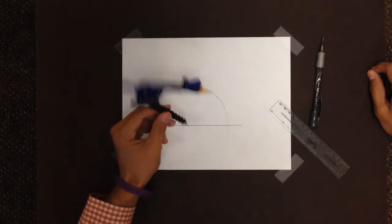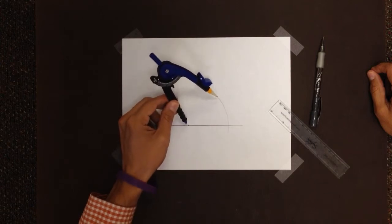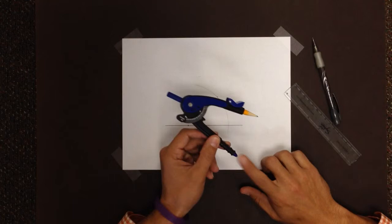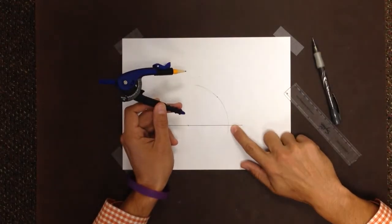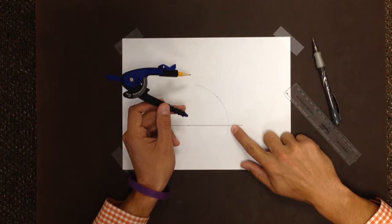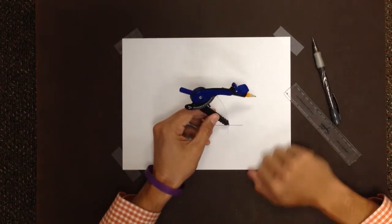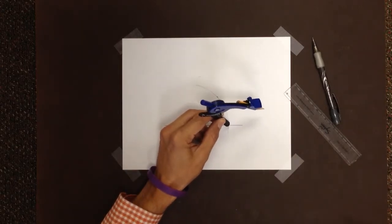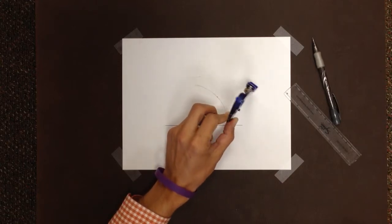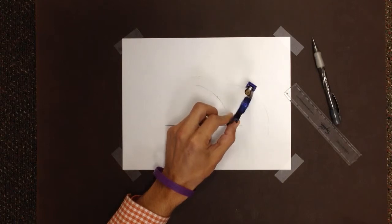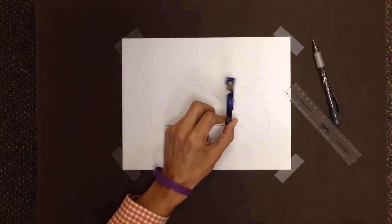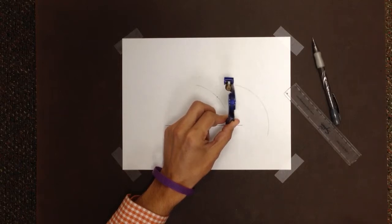Now without changing the width of my compass, you'll notice it's still the same, I'm going to move the non-pencil end to where my arc intersects my line. Put the non-pencil end there, and I'm going to draw just another arc. Another random kind of arc, maybe the same size as the first one I drew. Let's be a little darker. There we go. Much better.